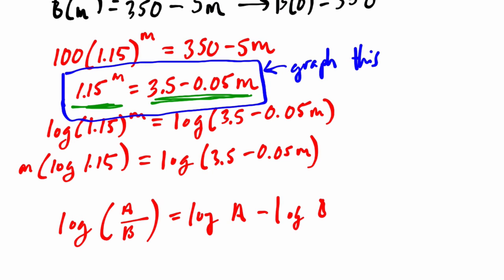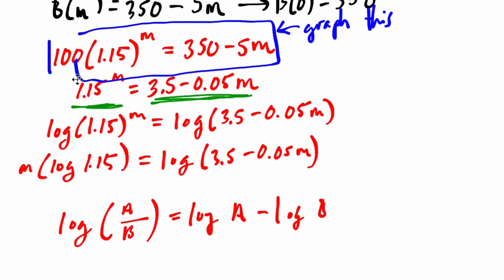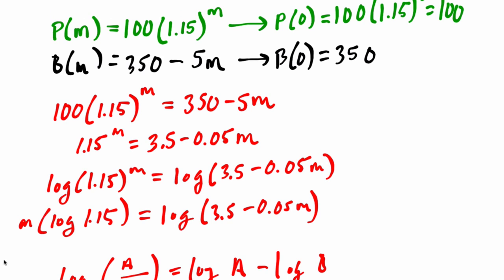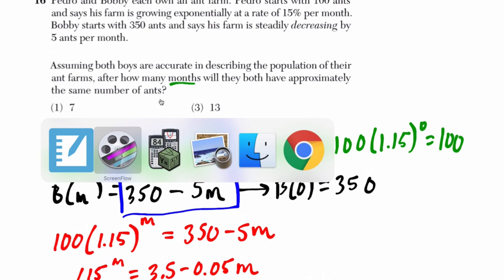Or, let me shift that up. You could just go back earlier. Graph the original two equations, Pedro's and Bobby's. We can see where those meet. And that will tell us the approximate answer. So, graph Pedro's and Bobby's and find where they meet. Let's do that.